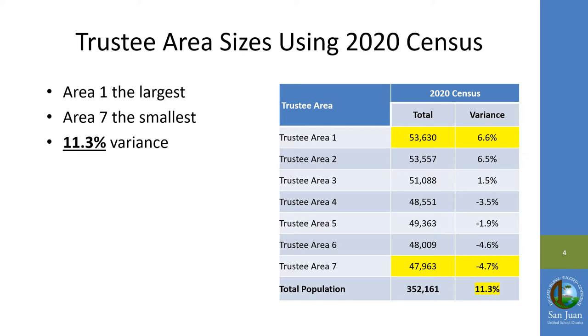If the trustee areas remain unchanged, there would be an 11.3 percent variance between the largest and the smallest areas, which is more than the law allows.